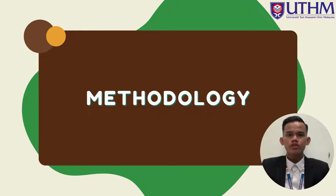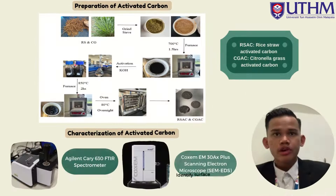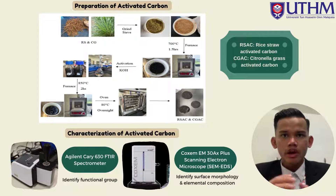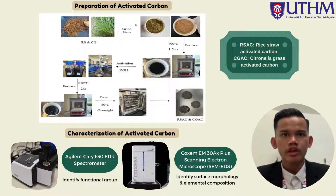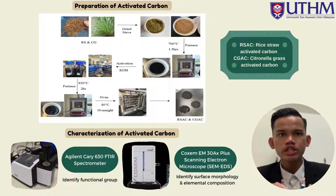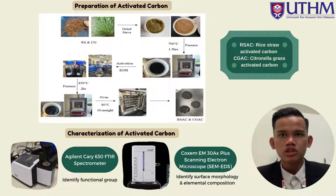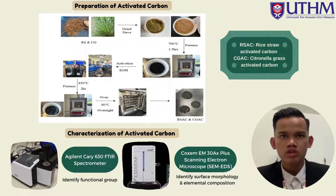My name is Boniface Garin Anak Joannes, and I will continue this presentation with the methodology part. The two biomasses used for the preparation of the activated carbon were Citronella grass and rice straw, sourced locally. The biomasses were washed and then dried under the sun for a few days. After that, the dry rice straw and Citronella grass were ground using a grinder and the powder was sieved. The carbonization process involved inserting the dried samples into the furnace, and one molar of KOH activating agent was used to soak the carbon at a ratio of 1:4 of carbon to KOH solution.